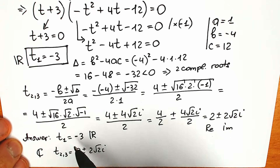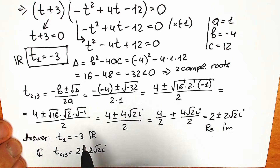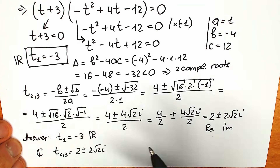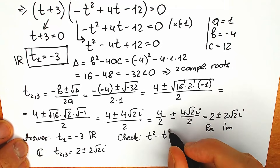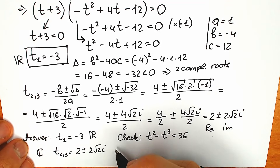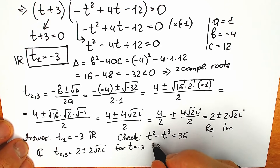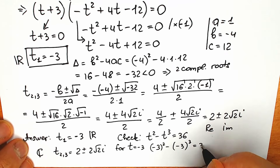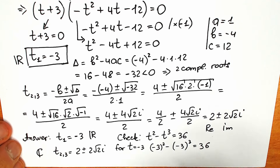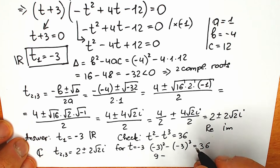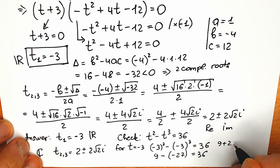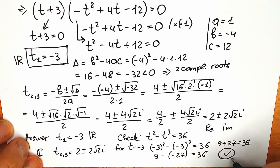Let's quickly check t₁ equals minus 3 in the original equation t squared minus t cubed equals 36. Plugging in: (minus 3) squared minus (minus 3) cubed equals 9 minus (minus 27) equals 9 plus 27 equals 36. Our root is absolutely correct.